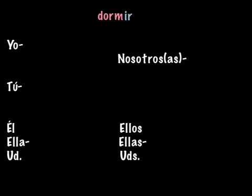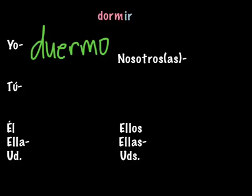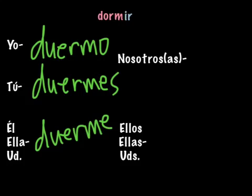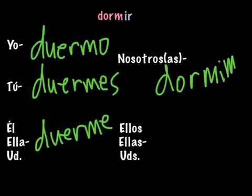Dormir is another example of an O to UE stem-changing verb. In the yo form it would be duermo. Tú duermes. Él, ella, usted duerme. Nosotros it's dormimos. And ellos, ellas, ustedes duermen.